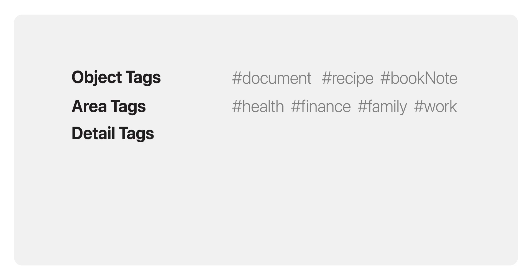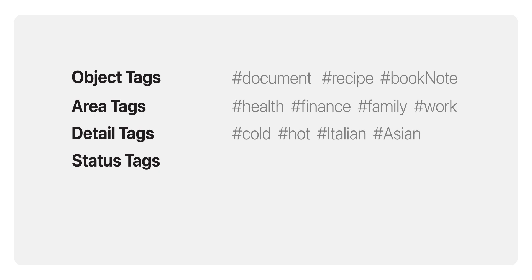Detail tags add more specific information about a note, allowing you to add extra layers of detail that can make searching even more effective. For example, if you have a recipe, you can use tags like #cold or #hot to indicate temperature, or #Italian and #Asian to indicate cuisine type. Detailed tags help you get really granular, so when you need to find something precise — like a hot Italian dish — you can do so instantly. Status tags are for keeping track of the status of your notes, whether something is #in-progress, #done, or even #to-do. Status tags are all about action — they help you understand where certain notes are in your workflow, making sure nothing falls through the cracks.